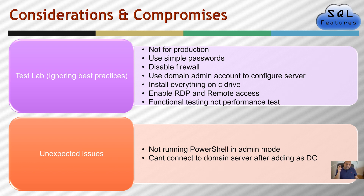We'll use very simple passwords, disable all firewalls, and use domain admin accounts so we don't have to worry about granting specific access to specific users for specific activities. We'll install everything on the C drive, enable RDP and remote access, and this will be functional testing — not performance testing. That's not the goal because we're working with about 16 GB of RAM, 8 CPUs, and 100 GB disks. If you have a bigger environment, you could use it for performance testing.